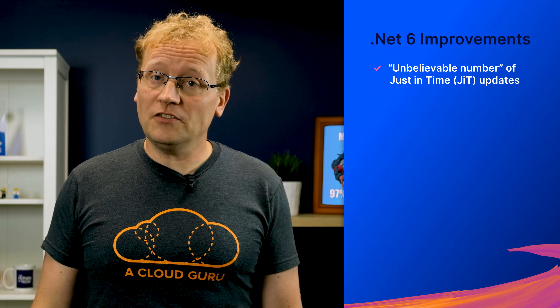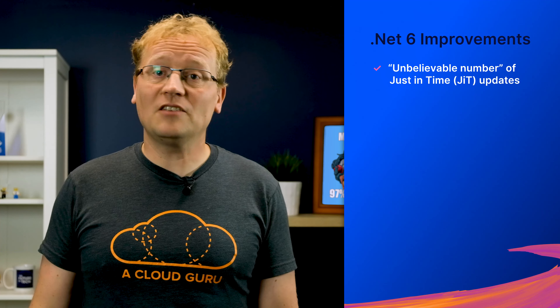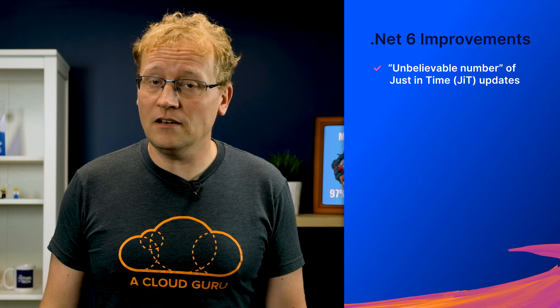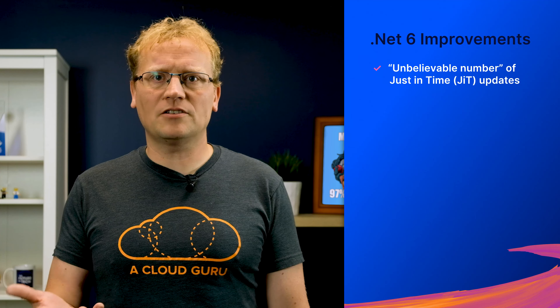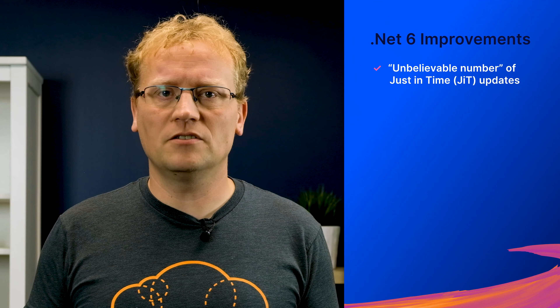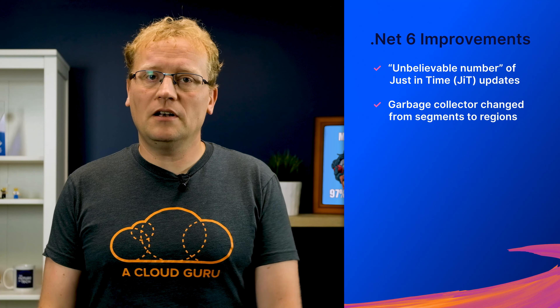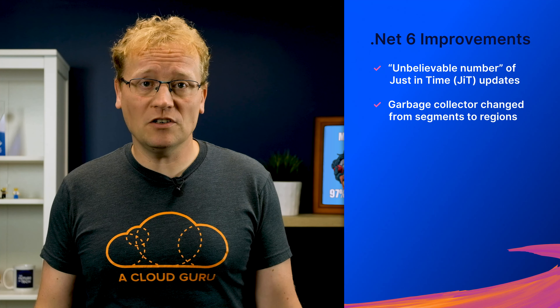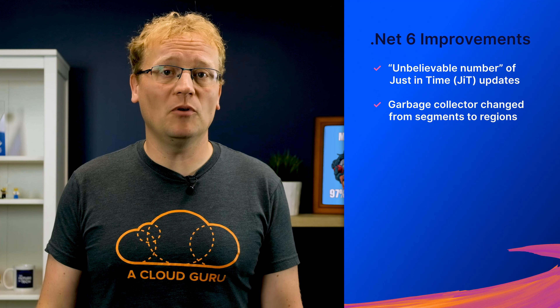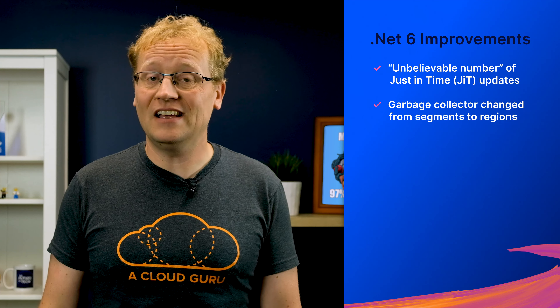Let me summarize for you. The just-in-time JIT compiler has been updated in an unbelievable number of ways. It has something to do with inlining and devirtualization. The garbage collector implementation has changed from segments to regions, which is significant in how the memory blocks are sized and used.